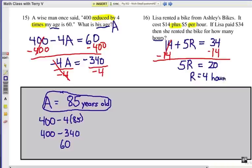Again, we want to check our answer, so let's put it in there. So $14 plus $5 per hour, well, 5 times the 4 hours we have, of course, would be 20. So that's $14 plus $20. And yes, that does give us $34 is what she paid for the rental.